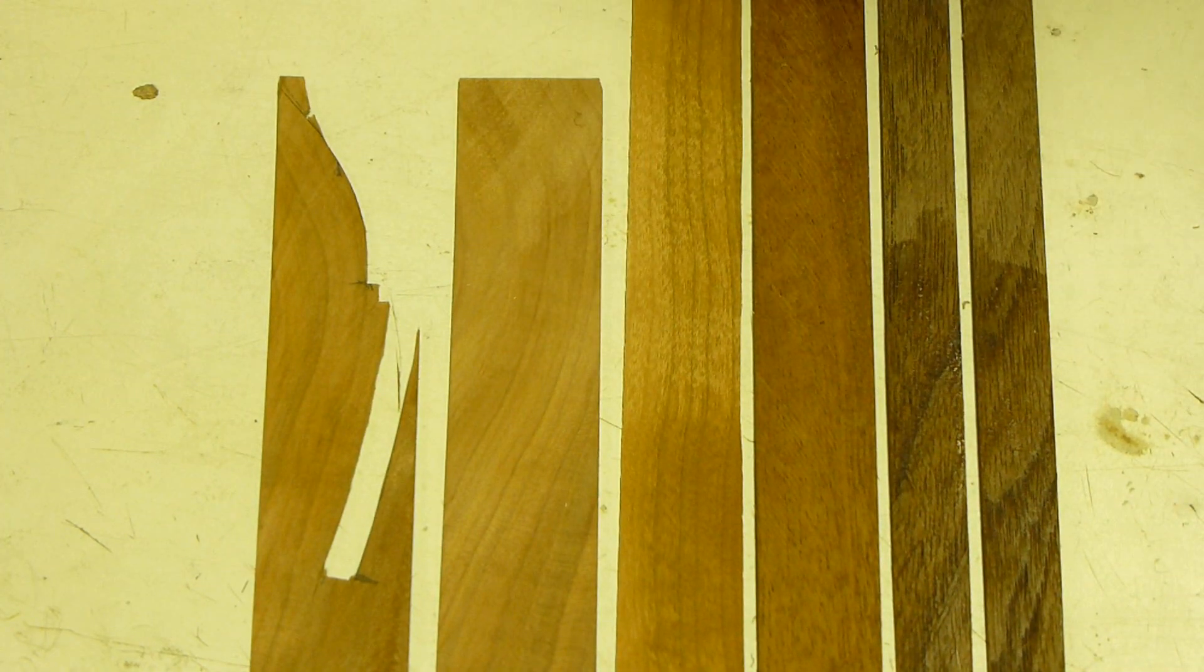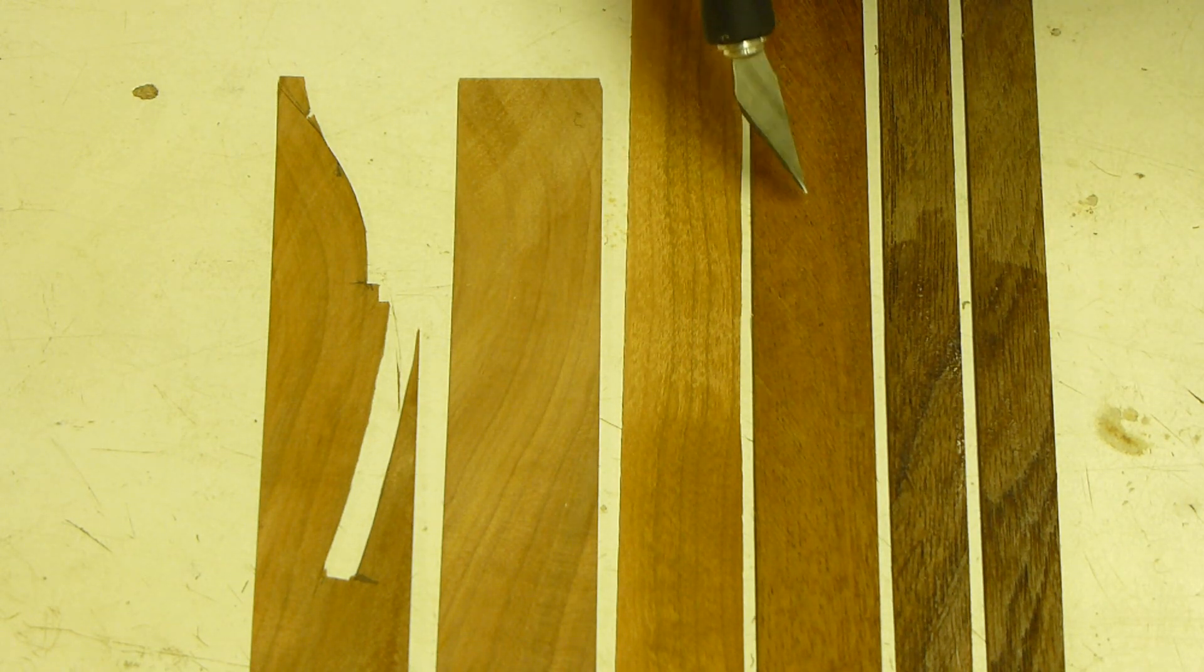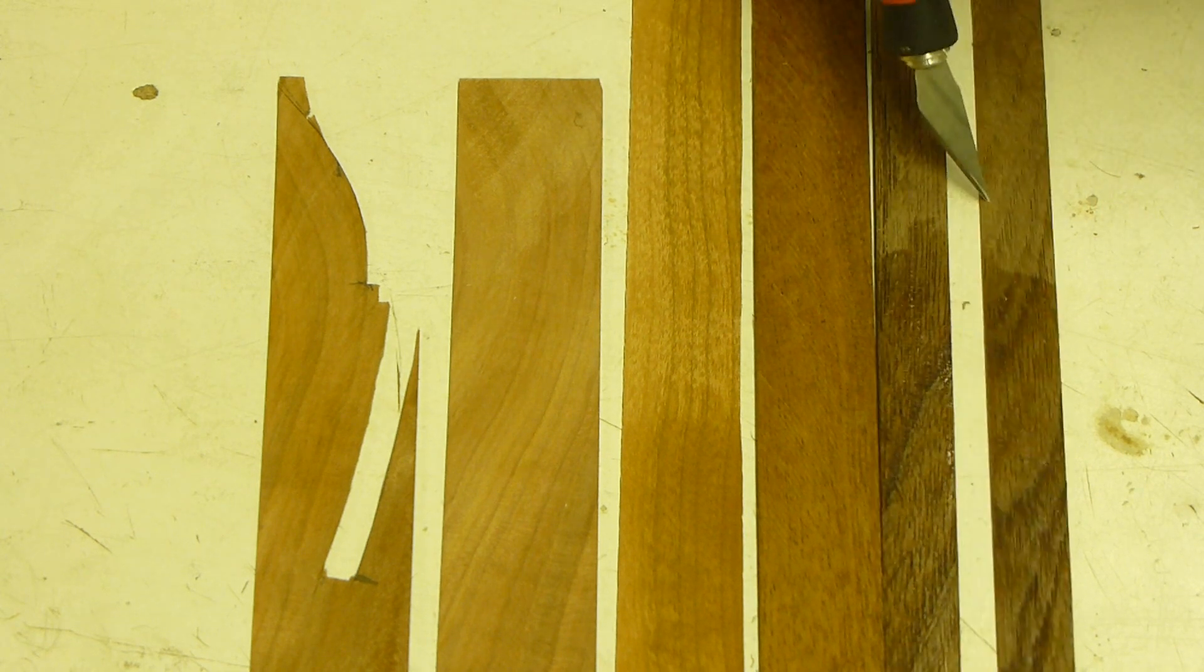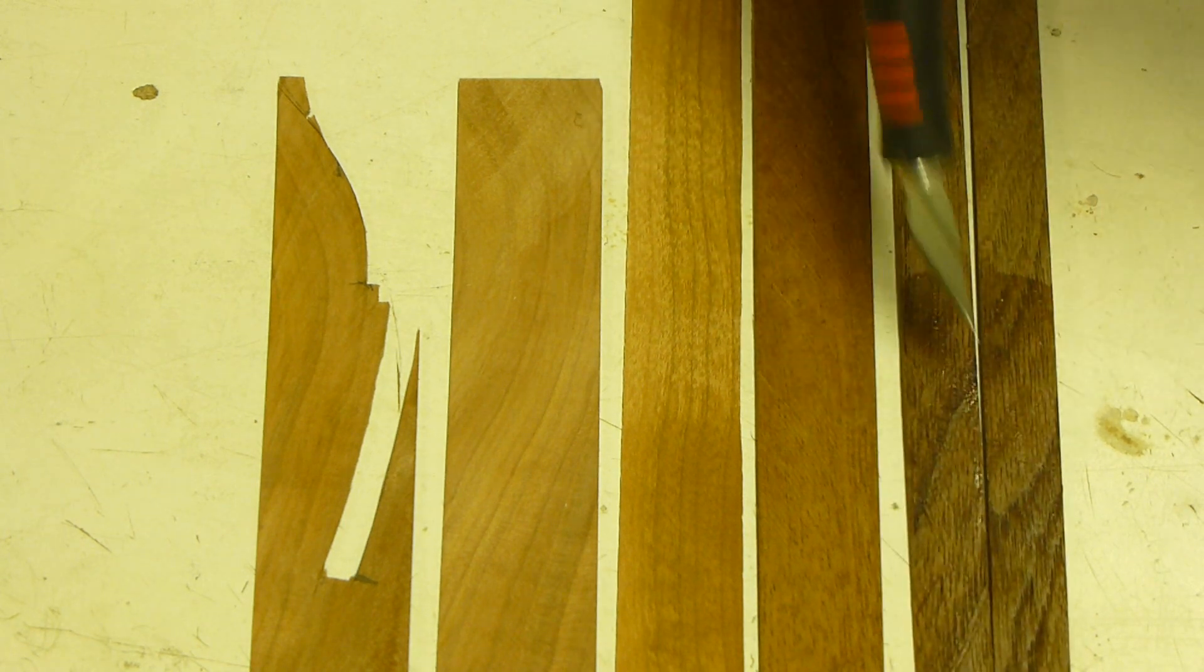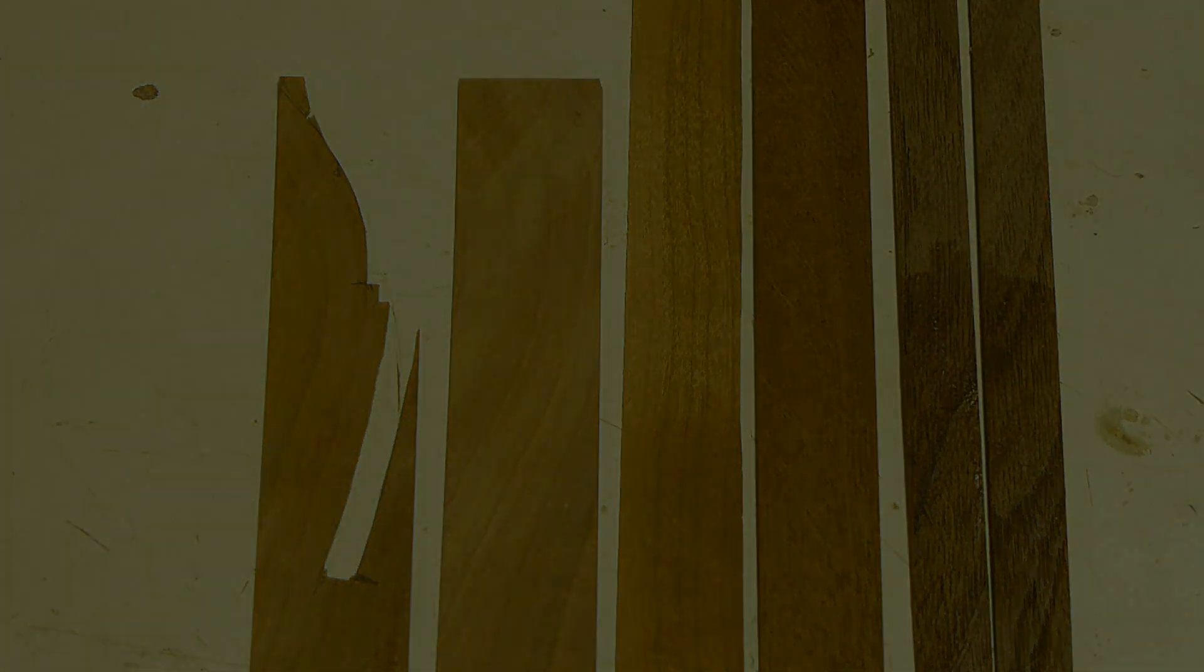Here I show you the variety of wood that I considered using. The cherry is off to the left, there's some mahogany, and then I decided to use a dark walnut for the bottom of the boat. These are the strips.